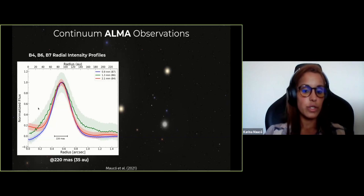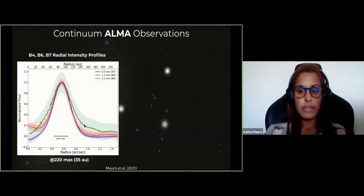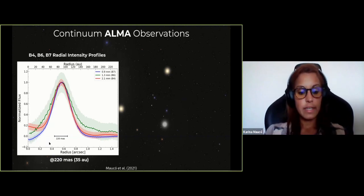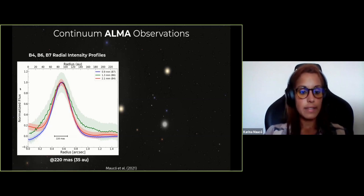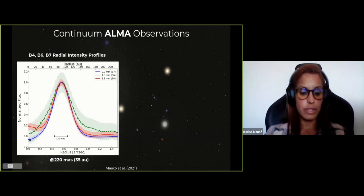We used archival observations at Band 7 (0.9 mm) and Band 6 (1.3 mm), and show here the radial intensity profiles for all three datasets. An important requirement for spectral index estimation is that all datasets must be at the same resolution, so we lowered the resolution to about 220 milliarcseconds — around 35 AU. All three profiles peak at roughly 90 AU, and we still see this excess of emission at the longer wavelength.